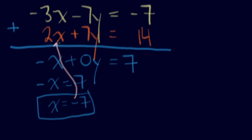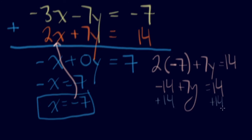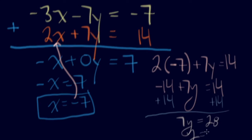I'll put x equals negative 7 into the second equation: 2 times negative 7 plus 7y equals 14. So negative 14 plus 7y equals 14. Adding 14 to both sides gives 7y equals 28, so y equals 4. The final answer — where the two lines cross — is negative 7 comma 4.